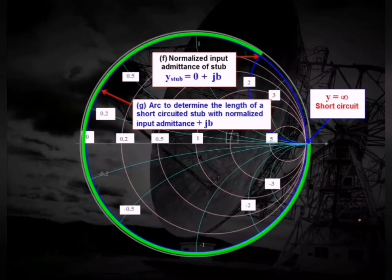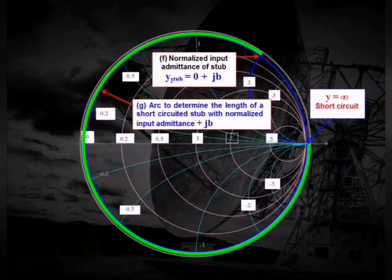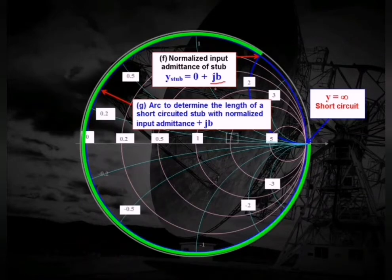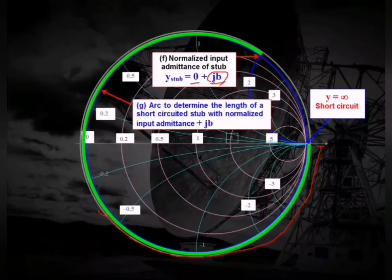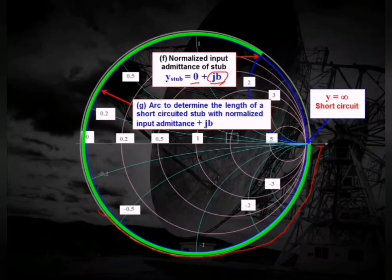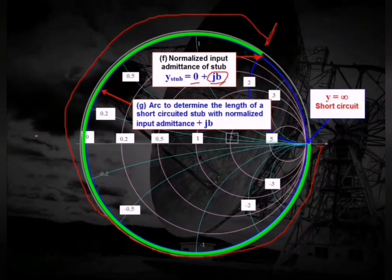For the second solution, where Y_D_stub = 1 − jb, the stub must provide +jb to cancel. Starting again from the Y-minima (short-circuit) point, move clockwise to the point 0 + jb on the r = 0 circle. Read the lambda value along that path — this gives the stub length L_stub for the second solution.